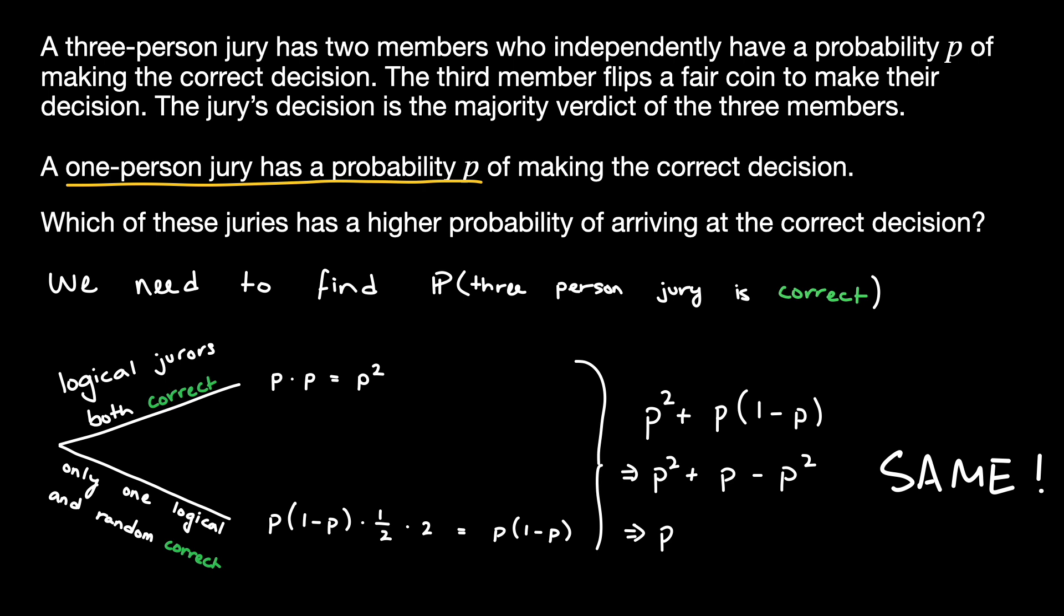What did you think of this solution? Did this answer surprise you? Does it make sense that a jury with two rational logical members has the same outcome of making the correct decision as a jury that picks completely at random in the situation? Let me know down below in the comments. Thanks for watching, and don't forget to like, subscribe, and share.